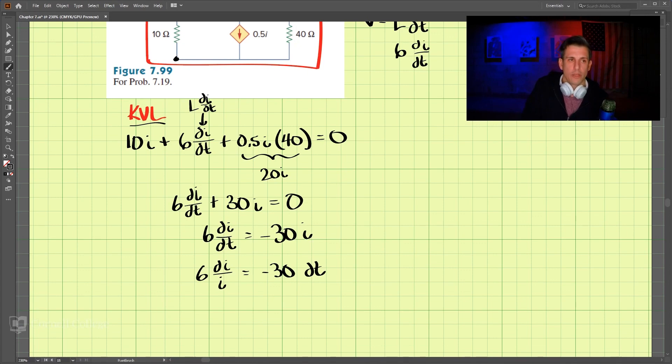Now what we can do is integrate both sides. We can integrate both sides here, and this is going to be integrated from I₀ to I, and this side is going to be integrated from 0 to t.